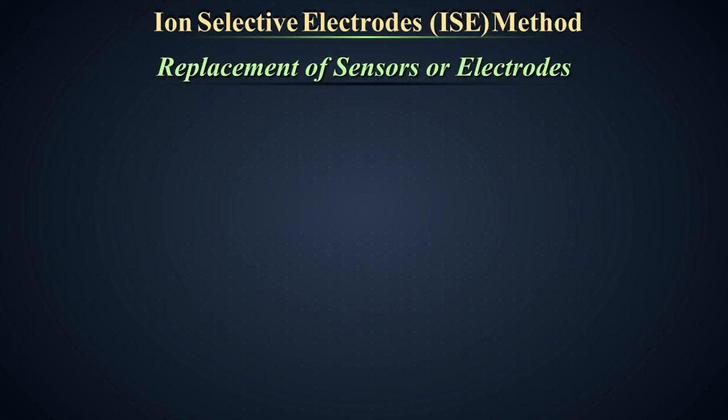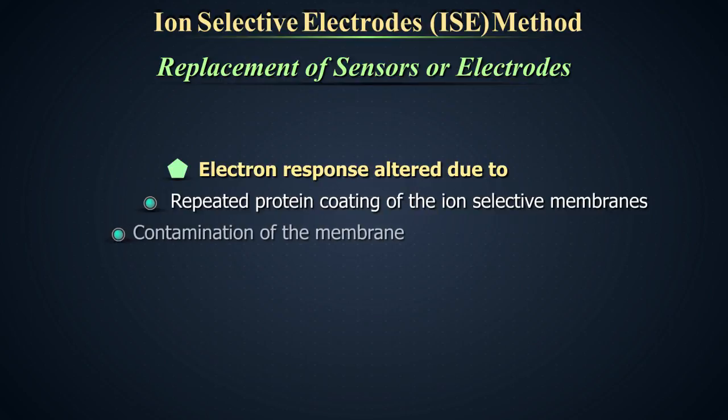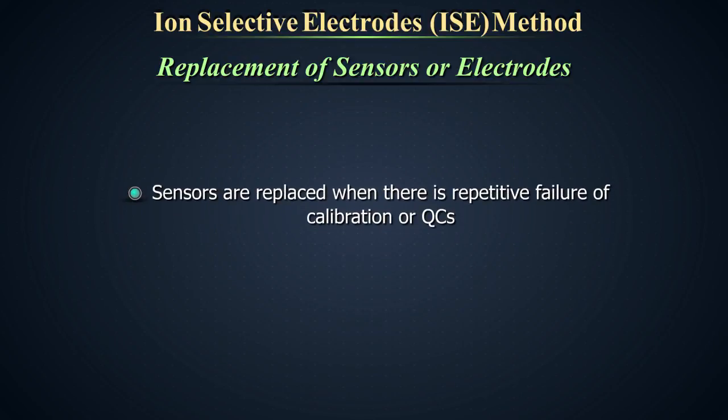Replacement of sensors or electrodes. Repeated protein coating of the ion-selective membranes, contamination of the membrane, salt bridge formation by ions can all alter electron response. These necessitate periodic changes of the membrane as part of the routine maintenance. The sensors should be considered for replacement if there is a repetitive failure of calibrations or quality controls.